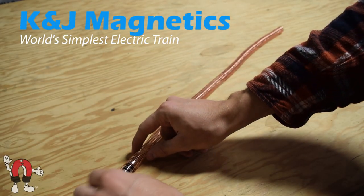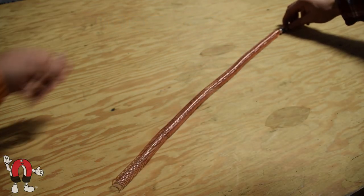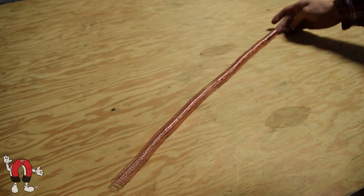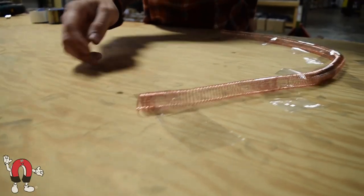So KJ is trying our hand at making a magnetic train, a double-A battery, and some copper wire. You've probably seen a few of these videos on YouTube, so we had to take a shot ourselves.